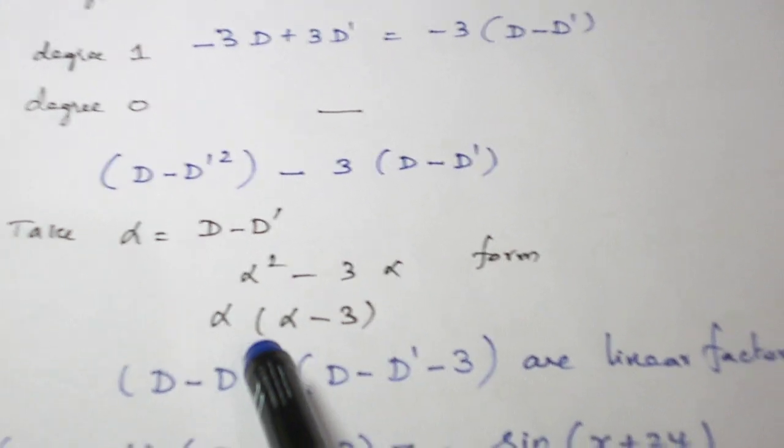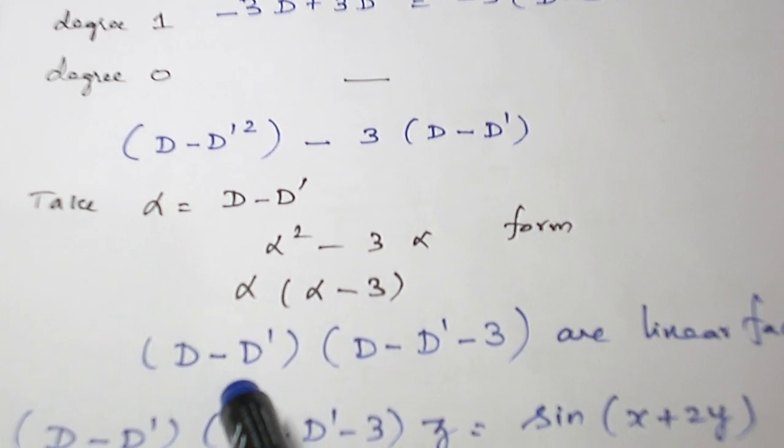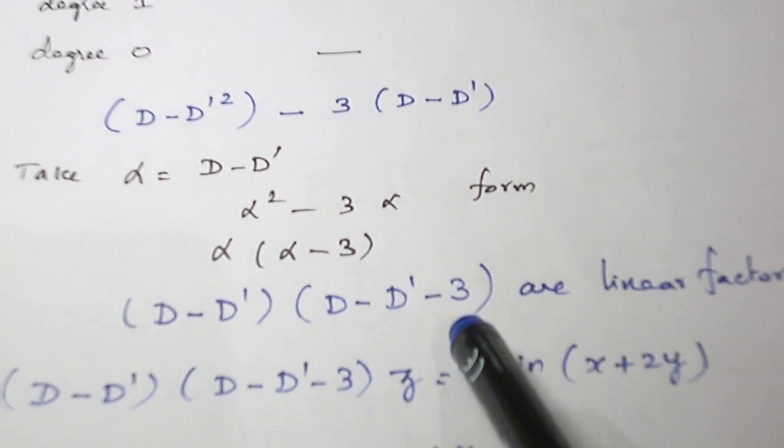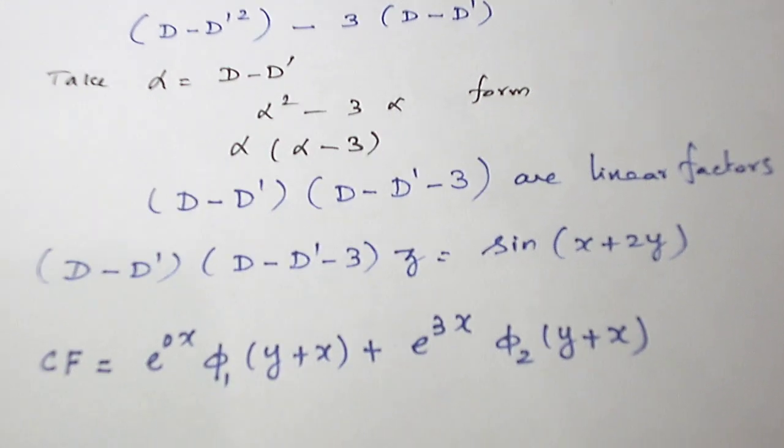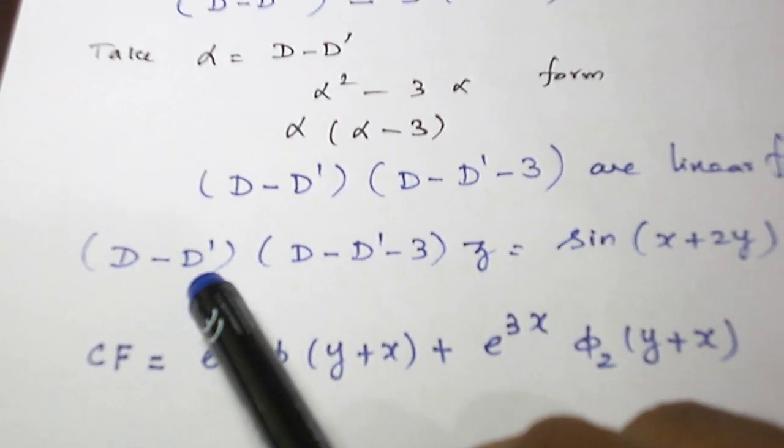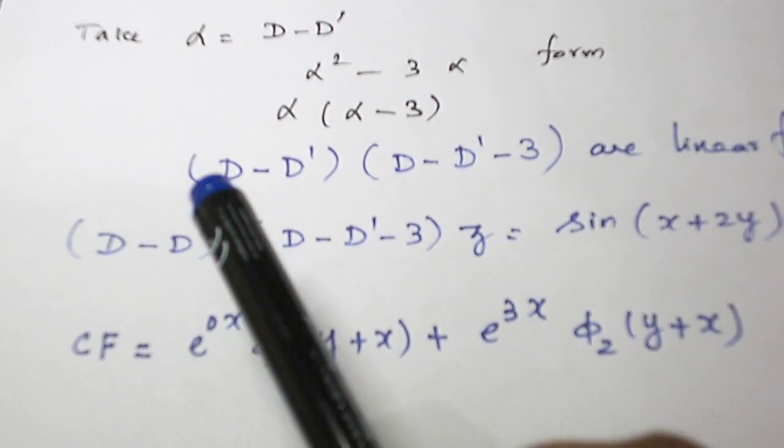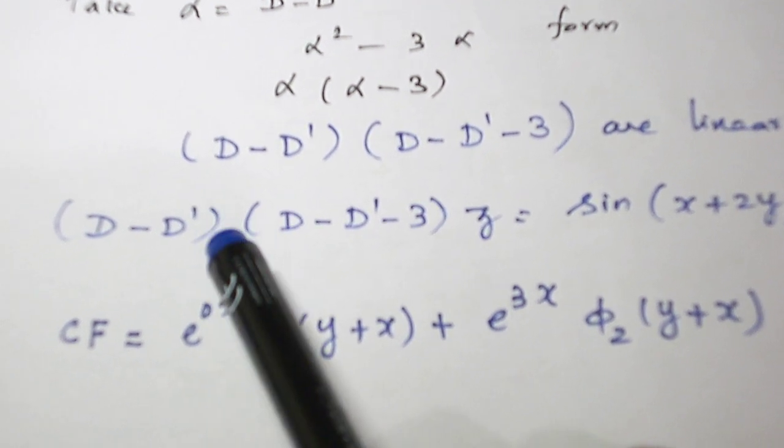Alpha, if we take it in common, alpha minus 3. So d minus d dash into d minus d dash minus 3 are the linear factors. Now, for this d minus d dash, the complementary function contribution is e power 0x. There is no constant.